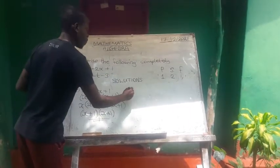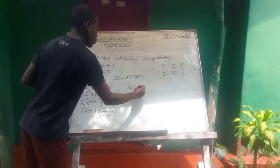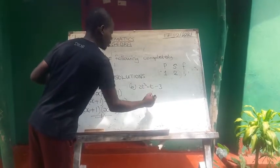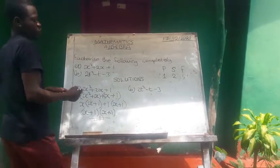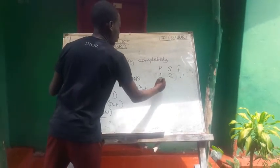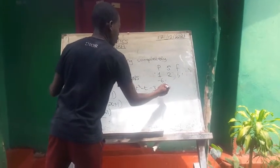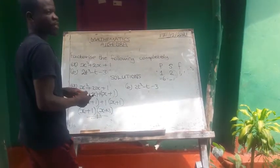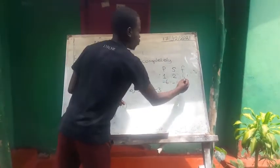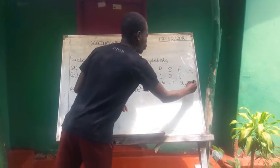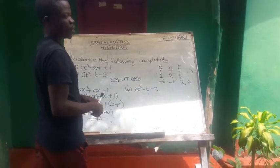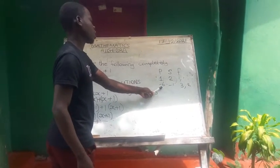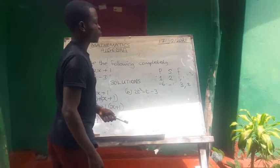Then we go to part B. 2t squared minus t minus 3. So the product here is going to be negative 6. Then sum negative 1. As for the factors, we are going to have 3 and 2. Now, we have to make sure that 3 and 2 should give us the product of negative 6 and the sum of negative 1.